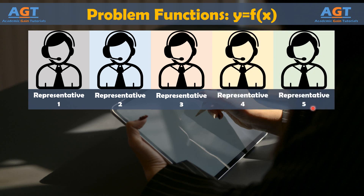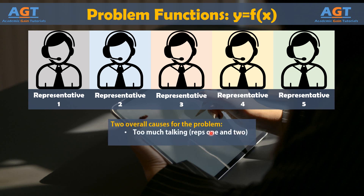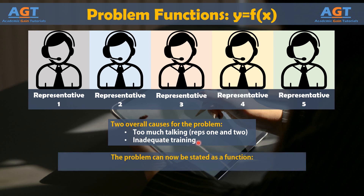The manager distills the data down to two overall causes for the problem. Cause number one: too much talking, observed for representatives one and two. Cause number two: inadequate training. The problem can now be stated as a function: the extra time is a function of too much talking and inappropriate training. The manager now has two root causes to address.